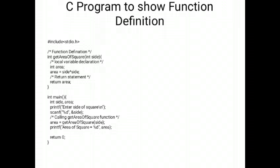So the value of the area is returned here. That is printf area of square equals percentage D, area. When we are calling the function name, the value is returned here. Then return 0 close bracket.